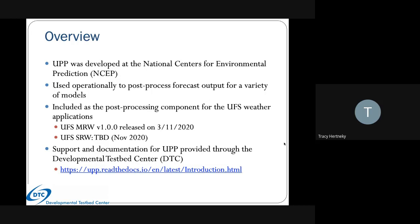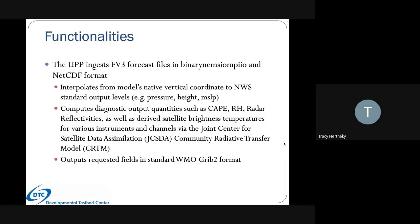The UPP ingests FV3 forecast files in binary NEMSIO and NetCDF formats. It interpolates from the model's native vertical coordinate system to NWS standard output levels such as pressure, height, and mean sea level. It can compute diagnostic output quantities for severe weather applications such as CAPE, relative humidity, and radar reflectivities — hundreds of others. It also derives satellite brightness temperatures for various instruments and channels via the JCSDA community radiative transfer model. It outputs all requested fields in standard WMO GRIB2 format.